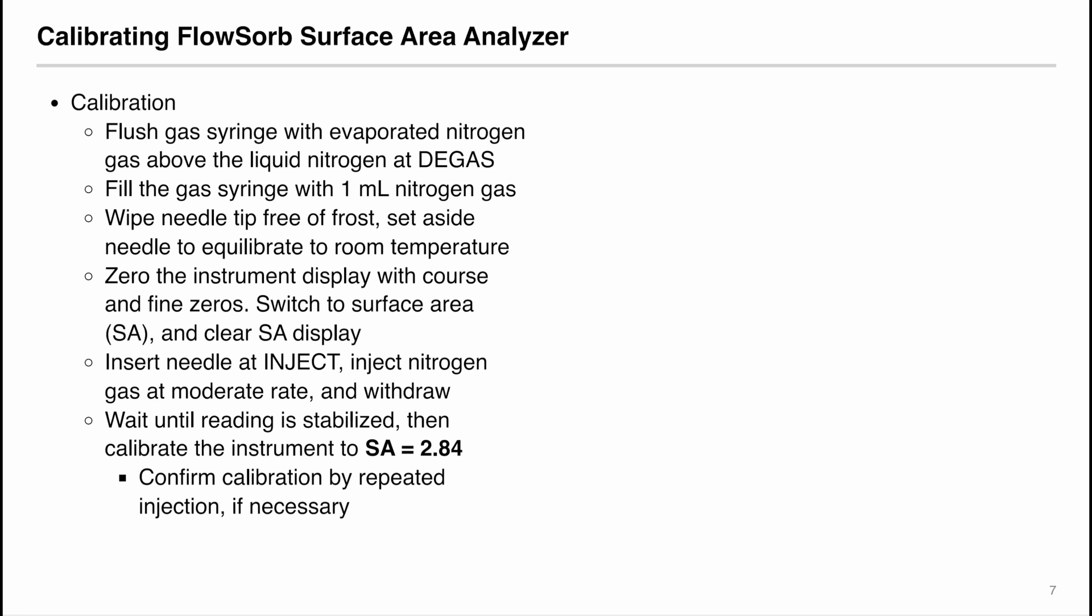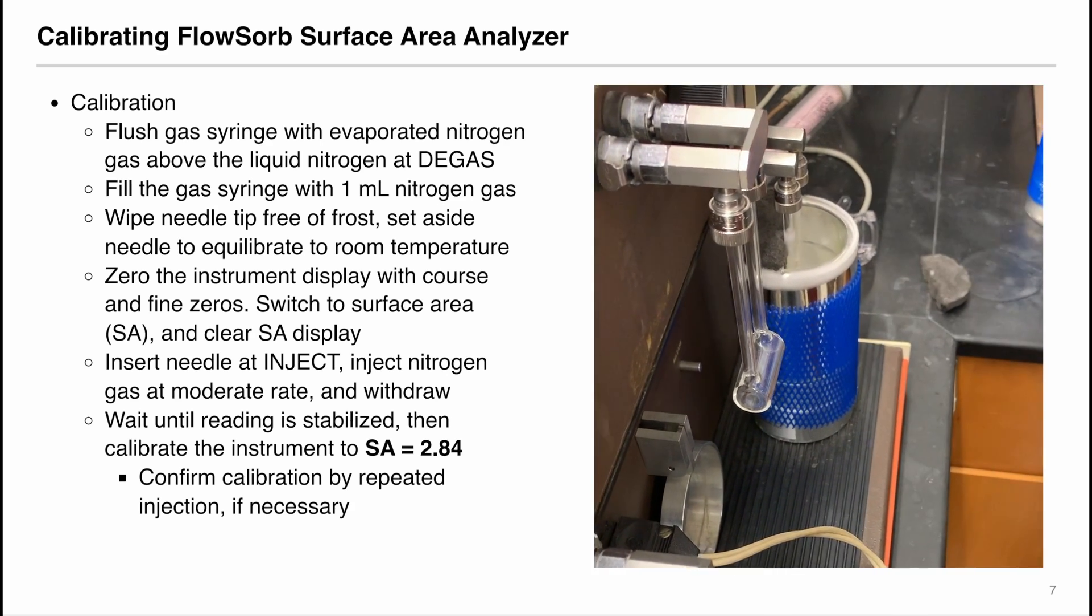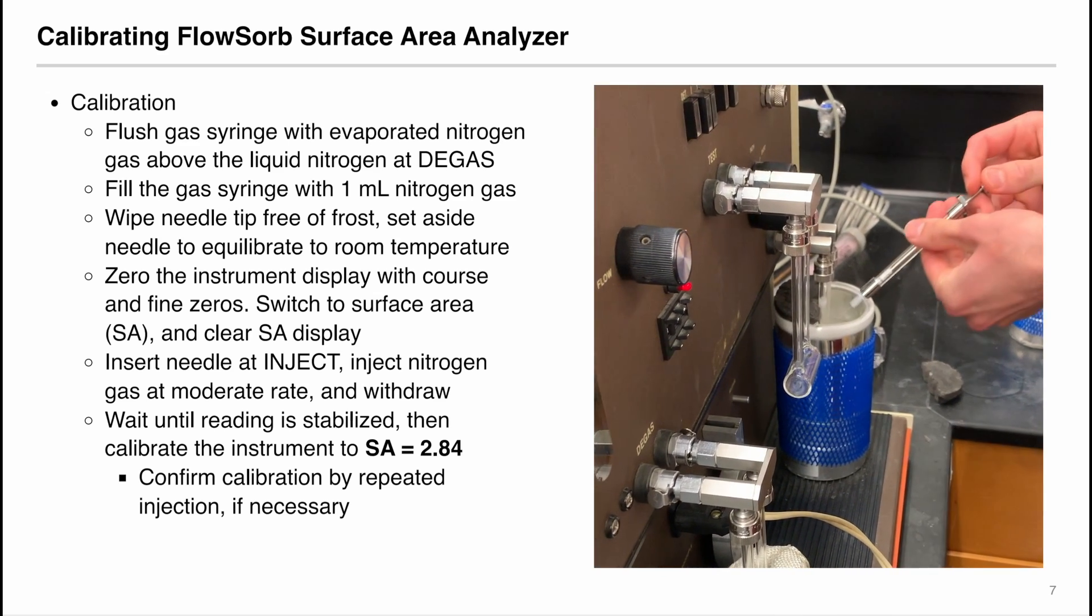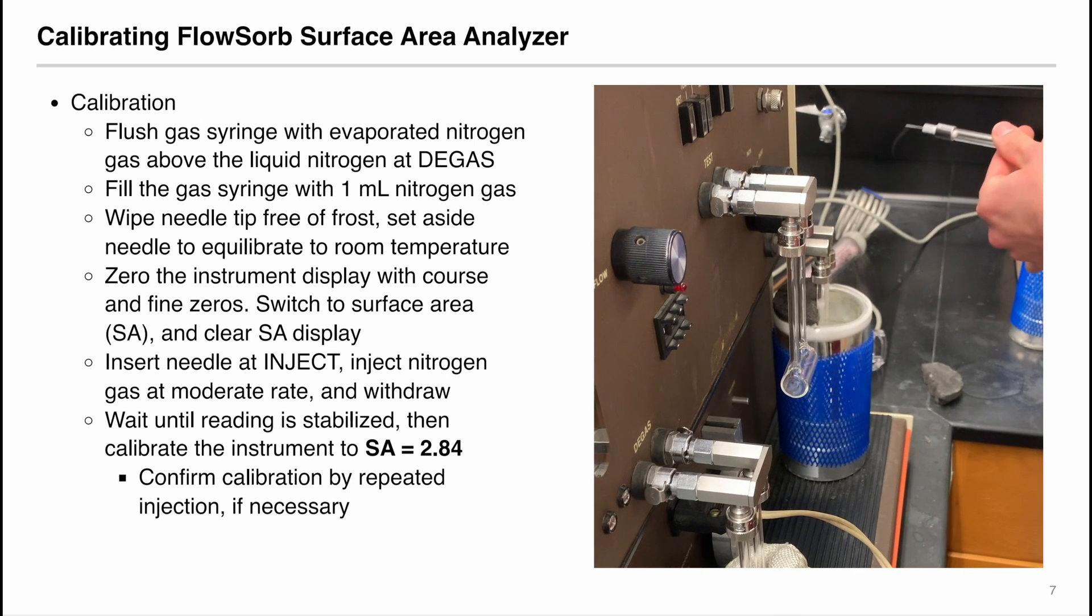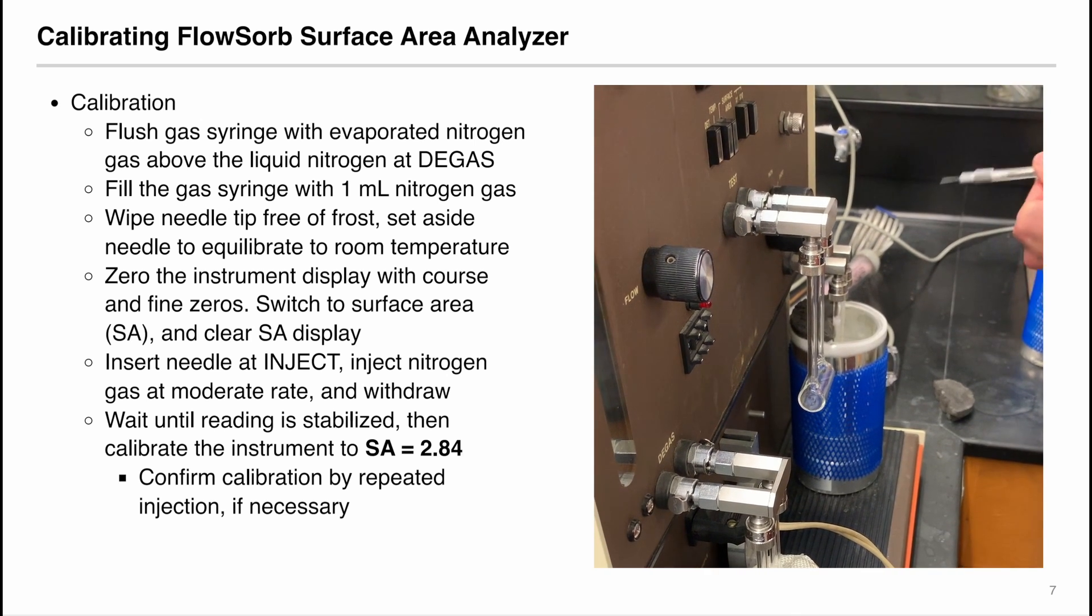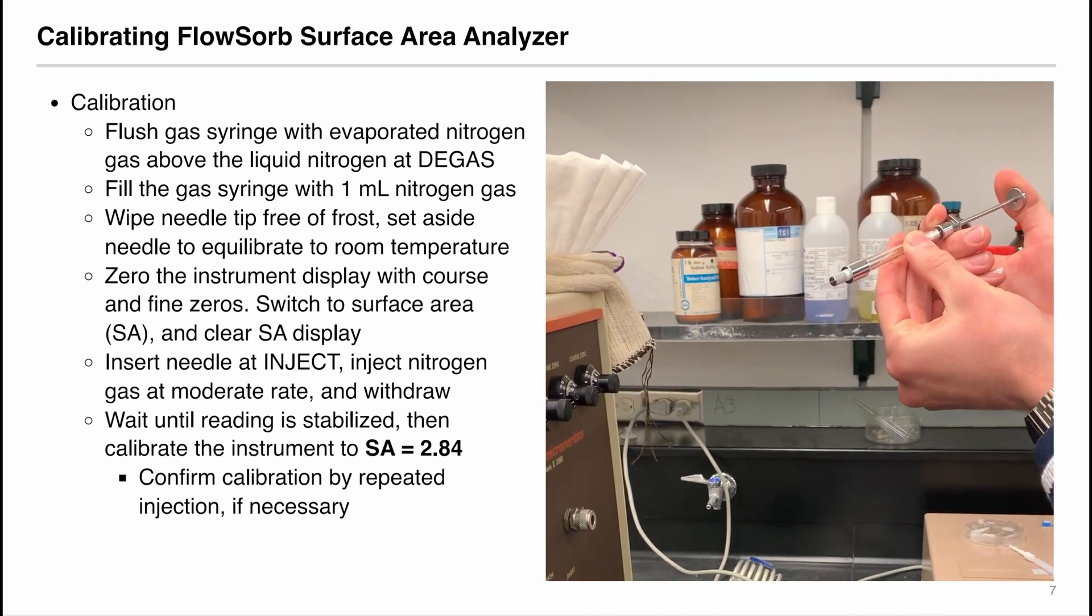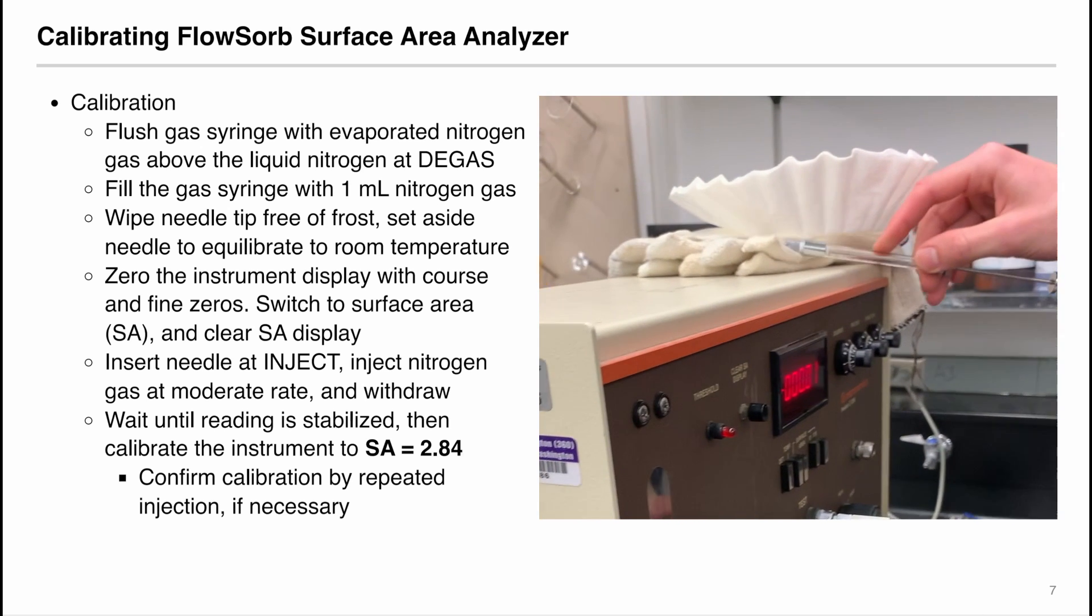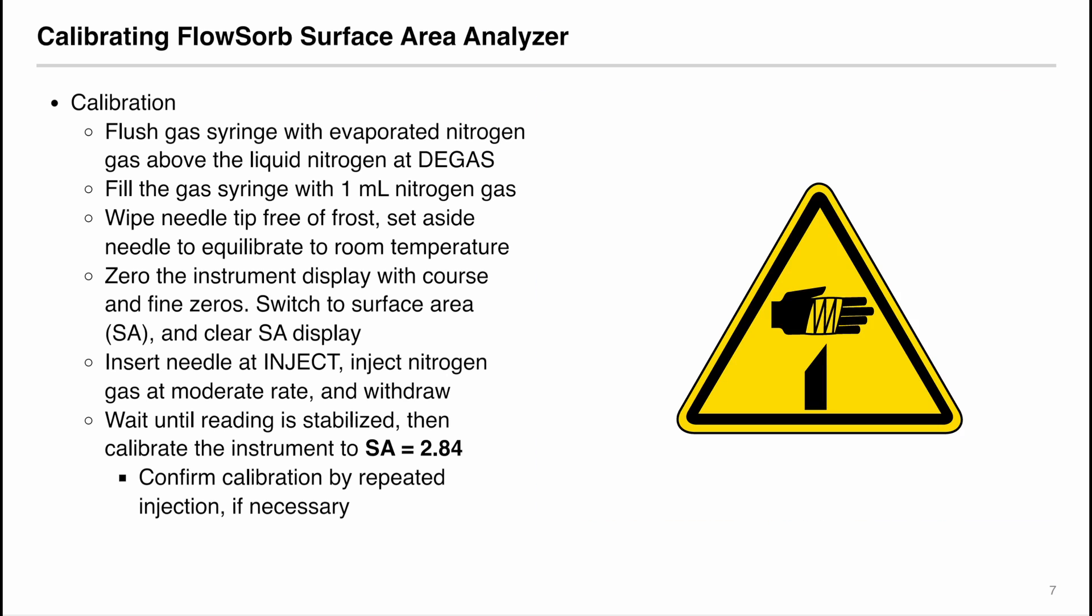To use the instrument, we must first calibrate the instrument. First flush the gas syringe with the evaporated nitrogen gas above the liquid nitrogen at the degas position. Make the gas syringe above the surface of the liquid nitrogen. Just like when you would rinse a syringe with deionized water, you would just rinse the gas syringe with the gas nitrogen. After rinsing, fill the gas syringe with one milliliter of nitrogen gas. Because it is cold, wipe the needle tip free of frost and set the needle aside. The needle will need to equilibrate with the room temperature. Make sure you never point the needle to anyone and handle the needle safely.